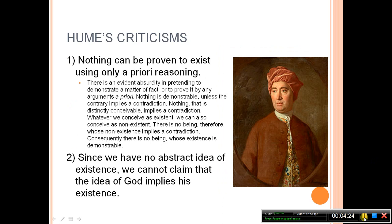Hume came to criticize ontological arguments as a whole, and in doing so, criticized Anselm's ontological argument on two fronts. One, nothing can be proven to exist using only a priori reasoning, according to David Hume. As an empiricist, he's not wanting to get anything out of these deductive-type arguments, because for him, knowledge comes through impressions of the world. The second reason is that we have no abstract idea of existence. Where Aquinas wanted to shut down the argument because we can't have a true understanding of God, Hume says we can't have a true understanding of existence, and so we cannot claim that the idea of God implies his existence.